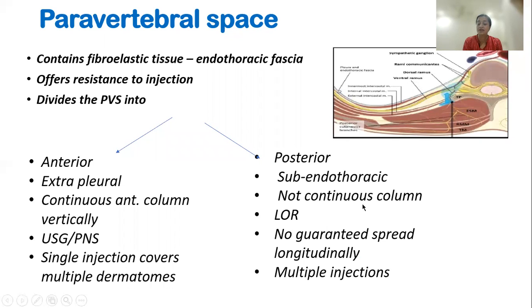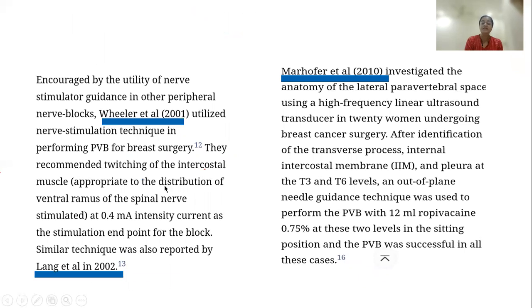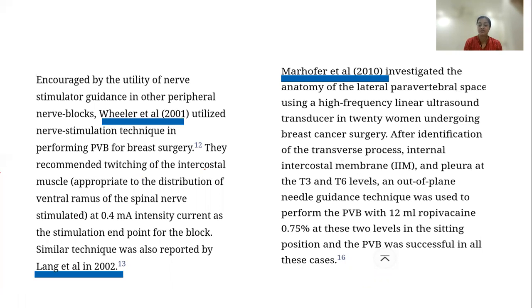The posterior space is not a very continuous column — this is where you enter in LOR-guided blocks, so there is no guaranteed longitudinal spread and hence multiple injections are needed. Wheeler et al. in 2001 utilized the nerve stimulation technique for paravertebral block for breast surgeries, eliciting intercostal muscle contraction by stimulating the ventral rami of the spinal nerve. The endpoint current was 0.4 milliamperes, though up to 1 milliampere is acceptable for a good intense block. Meropher et al. used the same technique at two levels with 12 ml of 0.75% ropivacaine to perform successful radical mastectomies using paravertebral block as the sole technique.